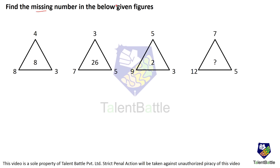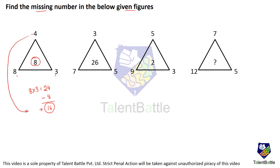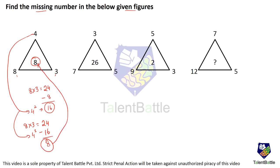Find the missing number in the below given figures. If you observe carefully, the relation is 8 multiplied by 3 comes out to be 24. Out of this 24, if we subtract 8, we get 24 minus 8 which is 16. 16 is nothing but 4 squared. Or another way: 8 multiplied by 3 is 24, minus 4 squared which is 16, comes out to be 8 — which is the number in the center.